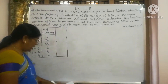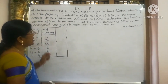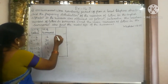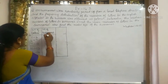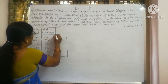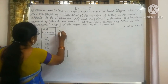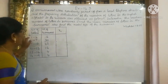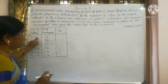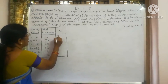Now, let us find the mean. To find the mean, first we have to find the mid values. Mid values are the x values. The mid value of the class 4 plus 1 is 5, and 5 by 2 is 2.5.